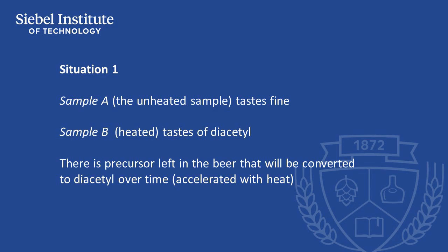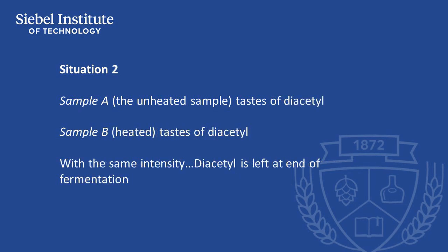In situation one, there is precursor left in the beer that will be converted to diacetyl over time, especially accelerated with any exposure to heat. In situation number two, sample A, the unheated sample, tastes of diacetyl, and sample B, the heated sample, also tastes of diacetyl with the same degree of intensity. That means diacetyl is left in the beer at the end of fermentation.